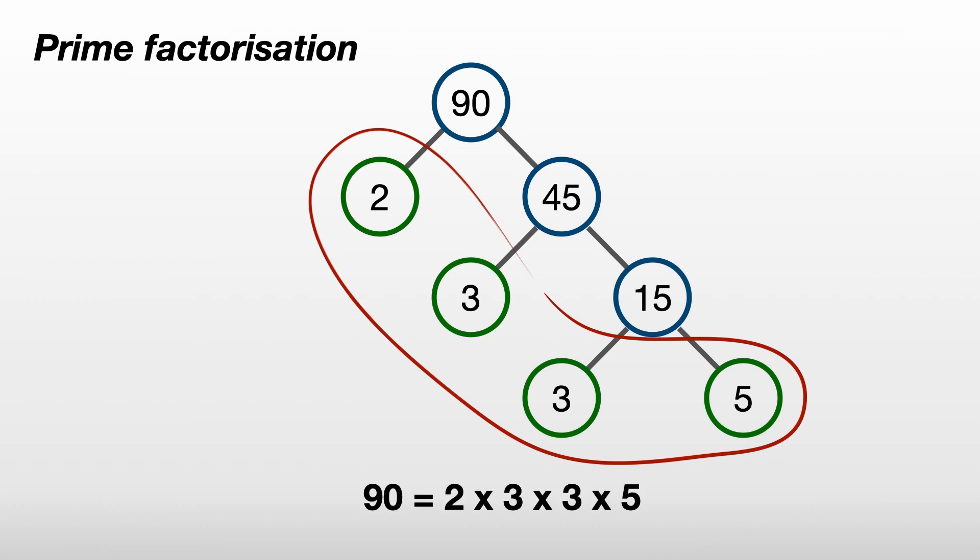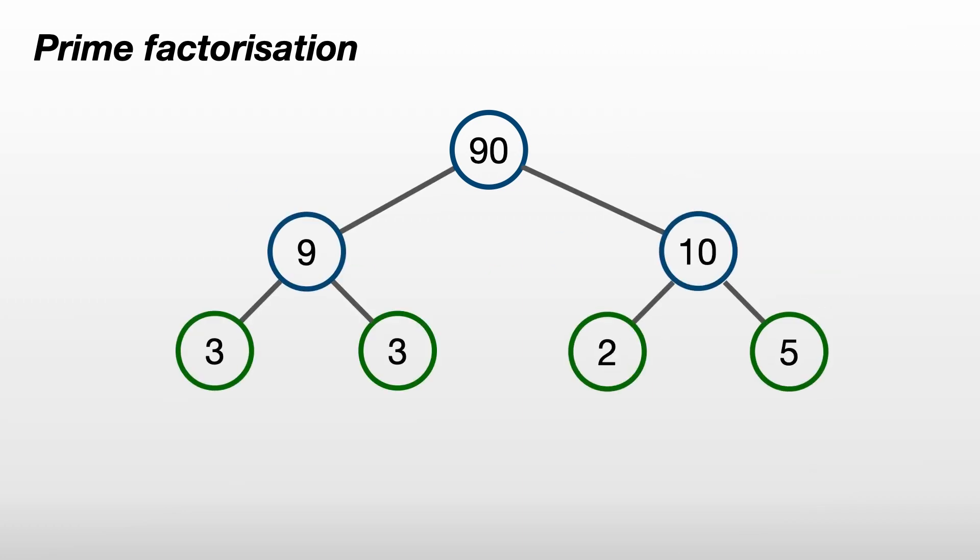To be honest though, we didn't have to be so organized as to start with the smallest prime numbers and factor them out in order. As long as we keep factoring, eventually we'll get the same set of prime numbers. Here I just decided to factor 90 into 9 and 10 to begin with.